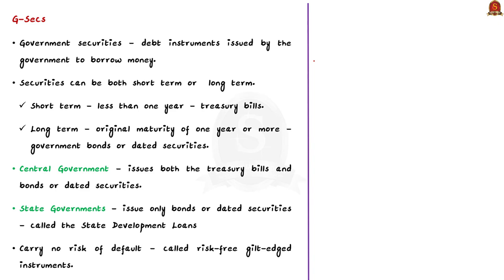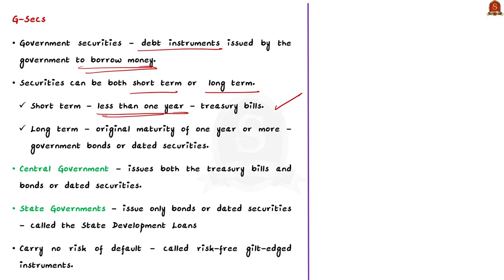What are government securities? Government securities are debt instruments issued by the government to borrow money — that is the main aim of government securities. Whenever the government needs funding, it borrows money from people through government securities. Such government securities can be both short-term or long-term. An example of short-term government security is the treasury bill — treasury bills are government securities with maturities of less than one year.